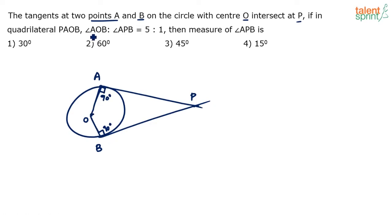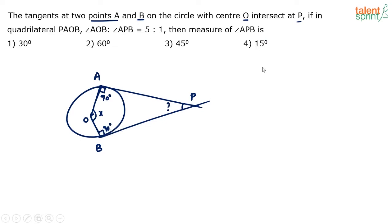In quadrilateral PAOB, angle AOB and angle APB are in the ratio of 5 to 1. The question asks: what is the measure of angle APB?